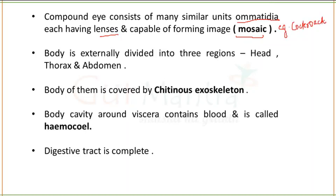Mosaic vision means the image formed by compound eyes is made up of many small segments. For example, cockroach is a nocturnal animal — if a cockroach sees a piece of bread, it will not see it as a whole piece, but in small segments. We call this mosaic vision.